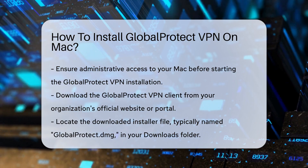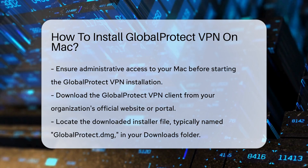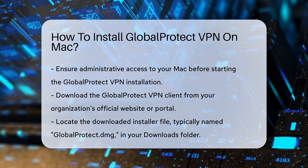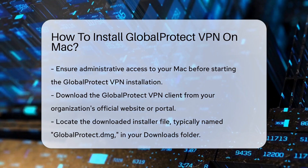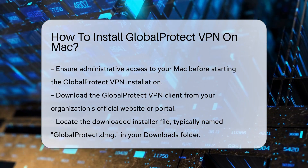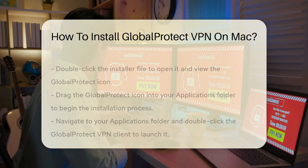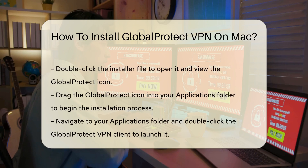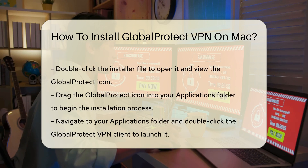Once the download is complete, locate the installer file in your Downloads folder. The file is typically named globalprotect.dmg. Double-click the file to open it.